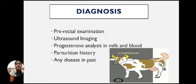Diagnosis: Methods include per-rectal examination, ultrasound imaging, and progesterone analysis in milk and blood. Additionally, parturition history and any past disease history of the animal should be reviewed.